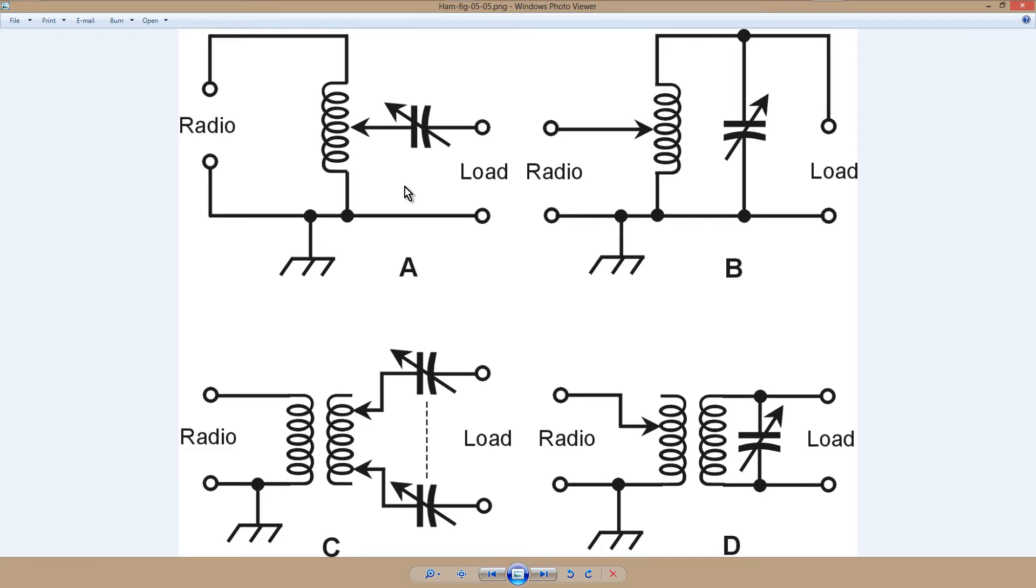You wouldn't need a tuner if you had a 1 to 1 standing wave ratio on an unbalanced load, because most unbalanced loads are 50 ohm coax, and if you have a 1 to 1 SWR on that, you don't need a tuner at all.